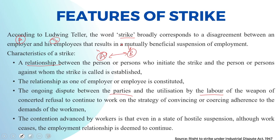It is an implicit strategy whereby workers try to convince higher authorities that if you want the organization or production unit to run normally, please accept our demands. Explicitly, they express their concerted refusal to perform. The contention advanced by workers is that even in a state of hostile suspension, the employment relationship is deemed to continue — so there is no violation of the employment agreement, even though work ceases for a particular reason.